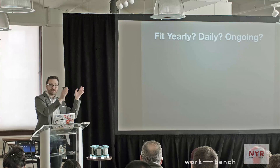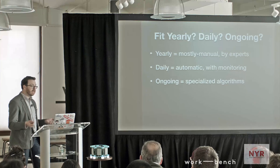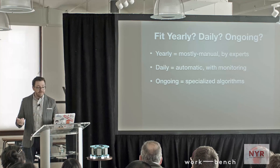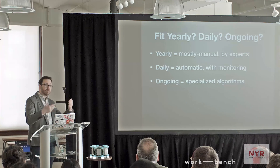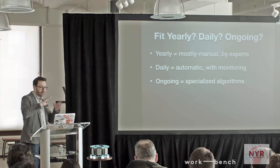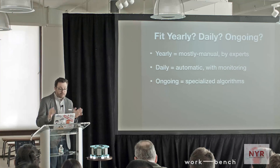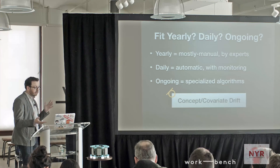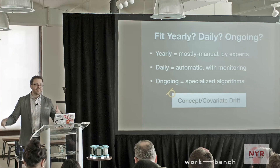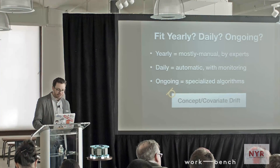The next question is fitting: how frequently do you need to fit a model? If you're doing it annually, that's probably someone sitting down for a week, figuring out the best hyperparameters and architecture. That's very different from a daily fit, which you'd do automatically with monitoring processes checking your daily cross-validation score. If you're fitting on an ongoing basis every time an input comes in, you're probably using a specialized online algorithm. This relates to the concept of concept drift or covariate drift — how fast does the world you care about change? Quarterly retail sales changes slowly; high-frequency finance or Twitter trends change very quickly.